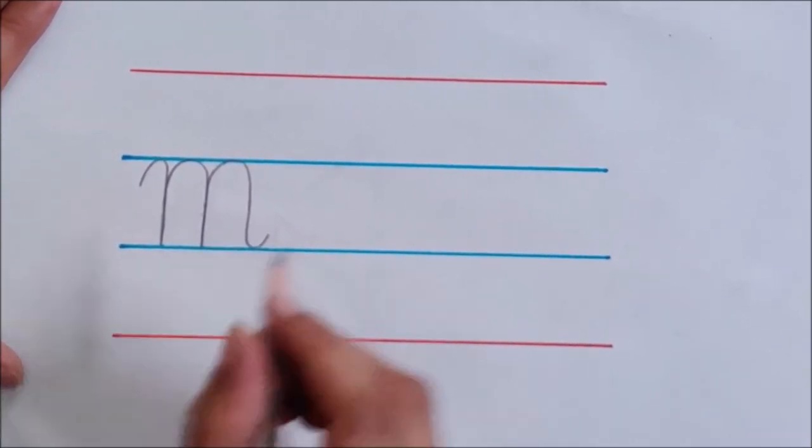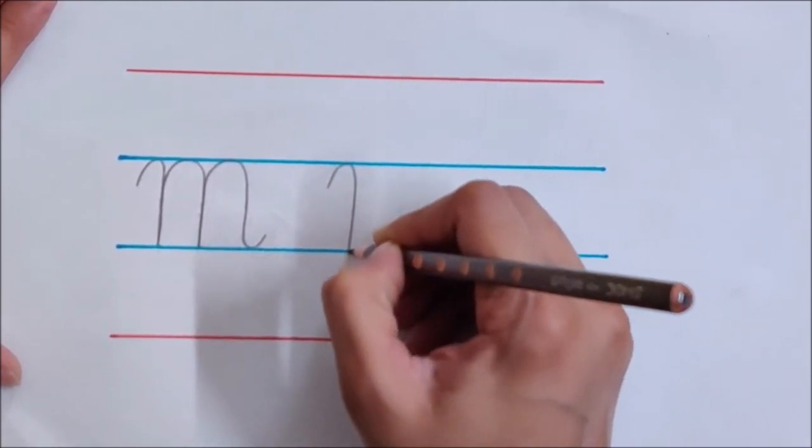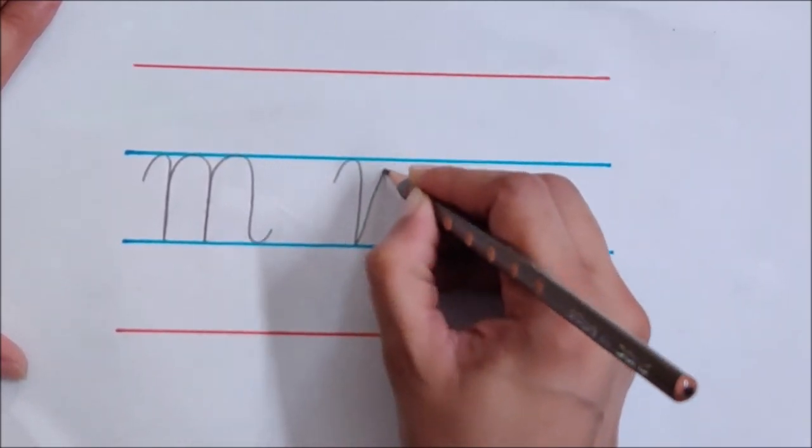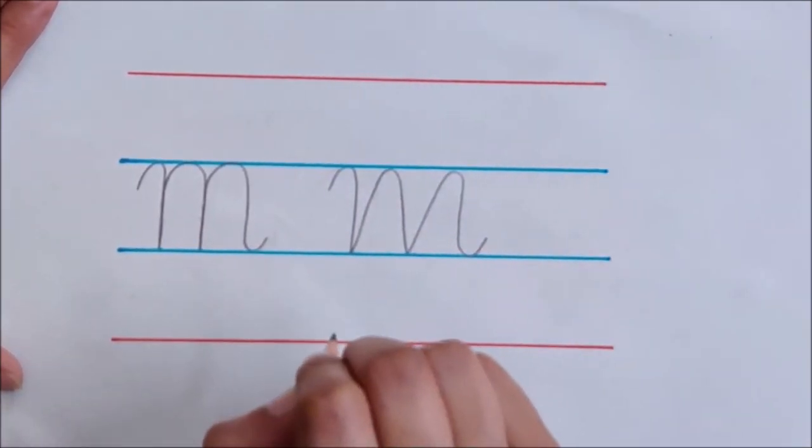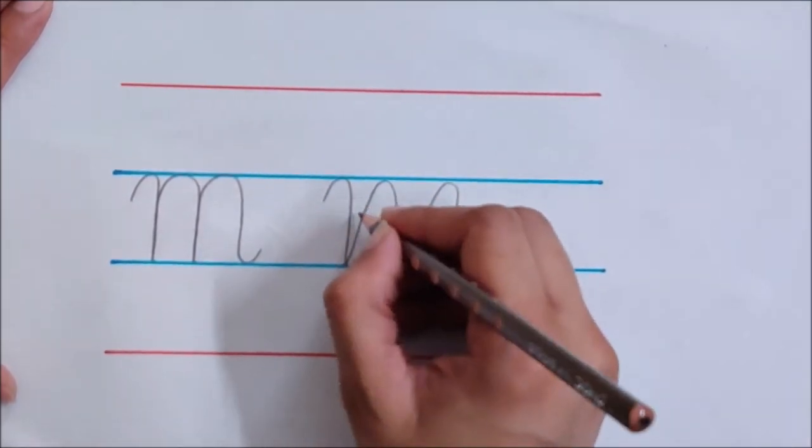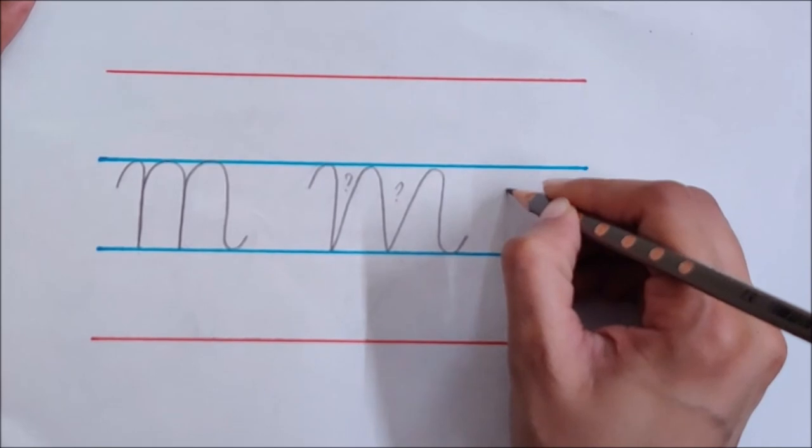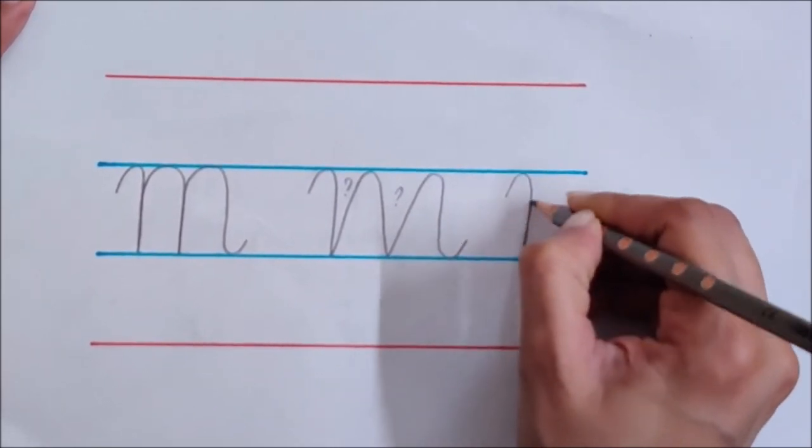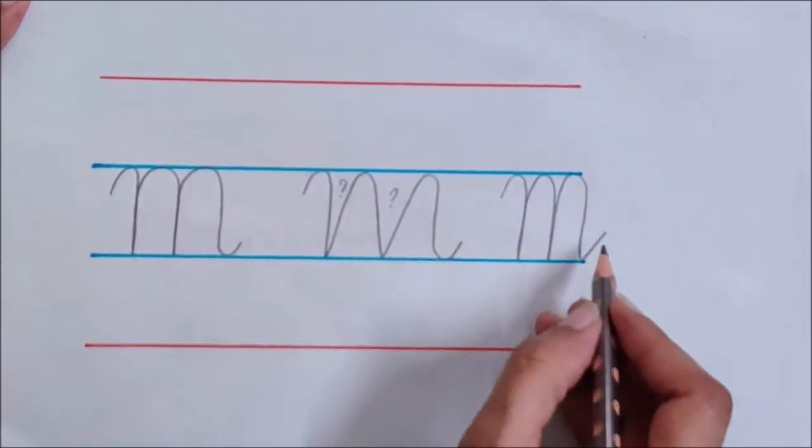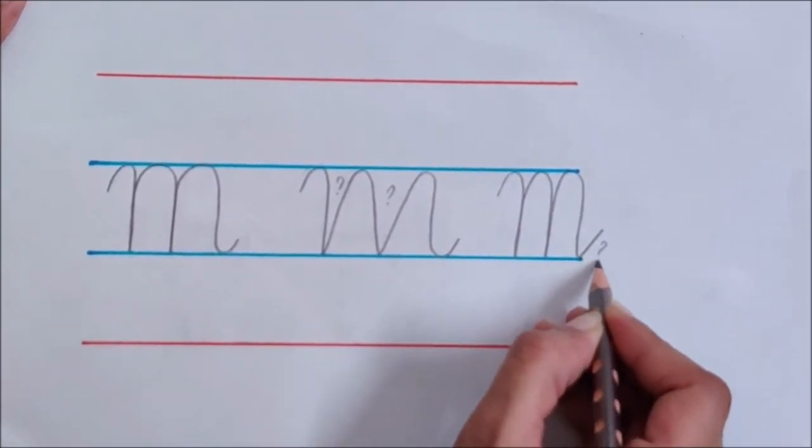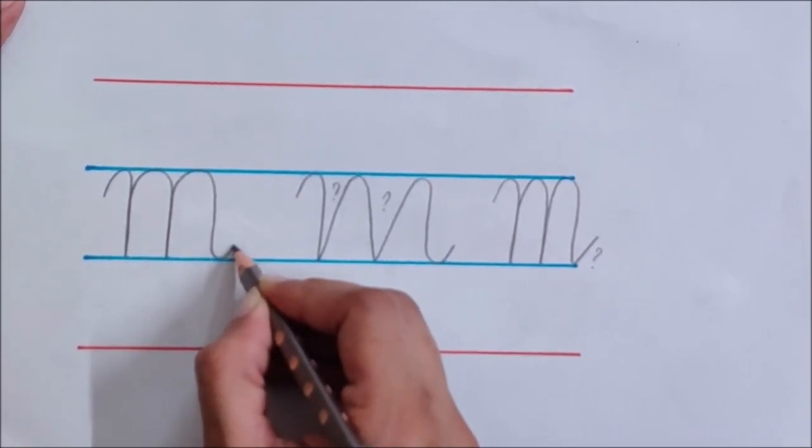And children, don't write M like this. See, if you will not come up on the same line, your M will be like this. This is wrong. This is not right. And also, don't write M like this. Tail is not like this. It is like this, a small curve. Okay, children.